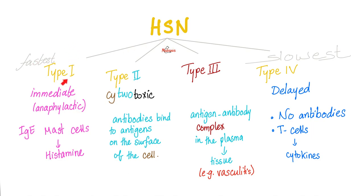Which one is the fastest? Type 1. Which one is the slowest? Type 4. Type 1 in a few words: immediate, anaphylactic, IgE, mast cells — they degranulate, releasing histamine, which gives you the symptoms of anaphylactic shock.